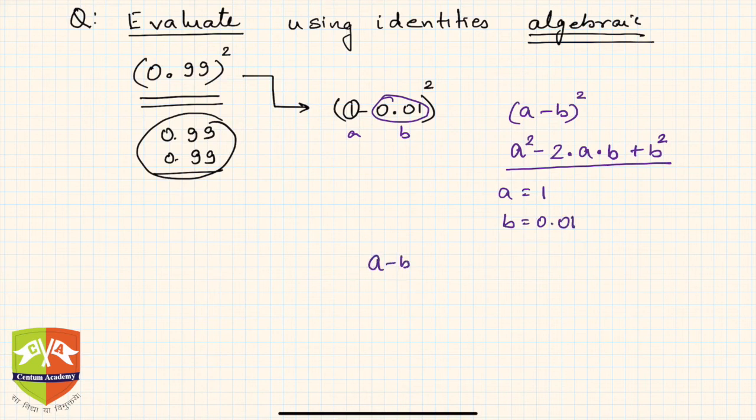Let us use this where a is 1 and b is 0.01. So (a-b)² will be nothing but 0.99², and using the identity I can write this as 1² - 2×1×0.01 + (0.01)².